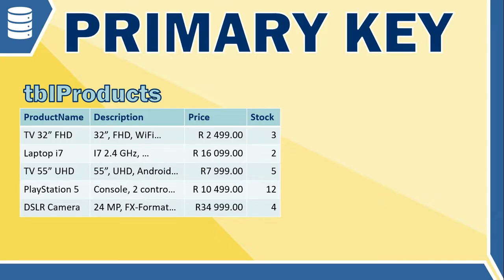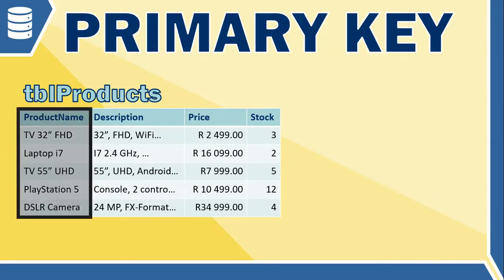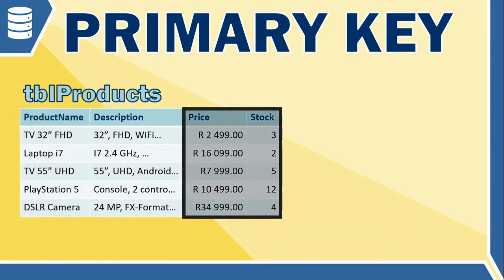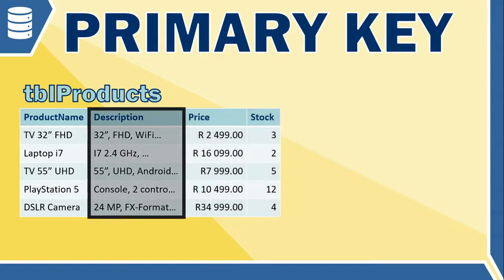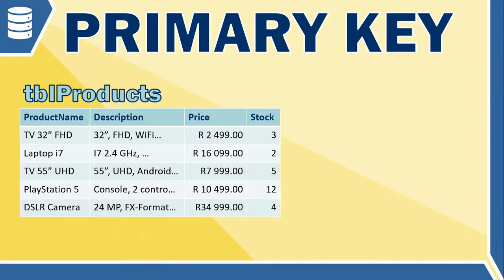Now let's apply this knowledge to a table of products. Each record has a name, description, price, and stock available. Looking at these fields: name is potentially unique, but I can't guarantee there will never be a product with the same name in the future. There are always chances that two products will have the same amount of stock available and the same price, so those are not good options. Description may be unique, but it's way too long to use as a primary key field.